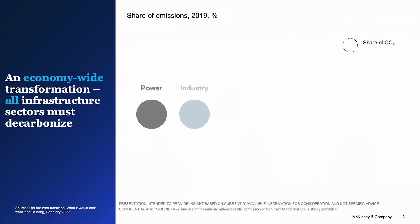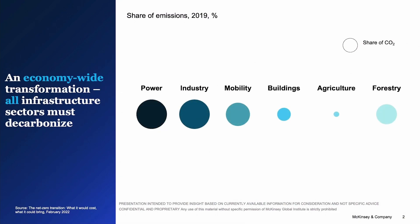Let's start by understanding the scale of transformation that lies ahead. This slide illustrates the scale of the shift needed across various energy and land use systems — everything from how we power our lives on the left, to how we build things when we consider industry, to where we live when we look at buildings. The bubbles on the chart indicate the contribution each of these systems have to CO2 emissions. Two things are clear: the vast majority of emissions comes from power, industry, mobility, and buildings.